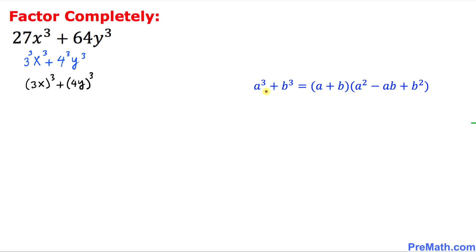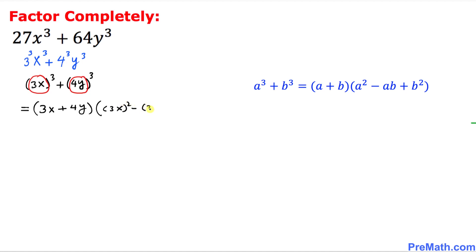So we are going to use the sum of two cubes formula: a³ + b³ = (a + b)(a² - ab + b²). Here, 3x is going to behave like a, and 4y is going to behave like b. So we can factor this nicely. This becomes (3x + 4y) times a² which is (3x)², minus a times b which is 3x × 4y, plus b² which is (4y)².